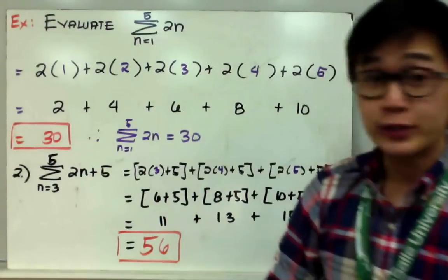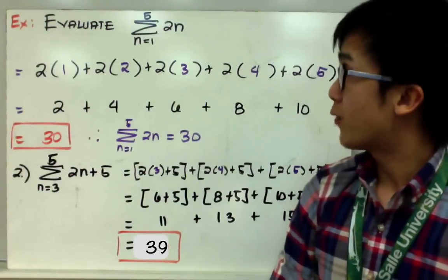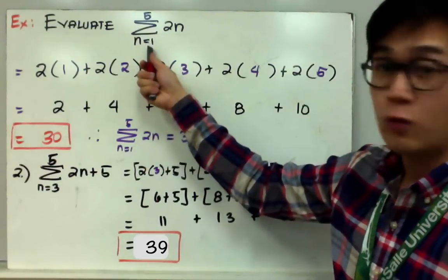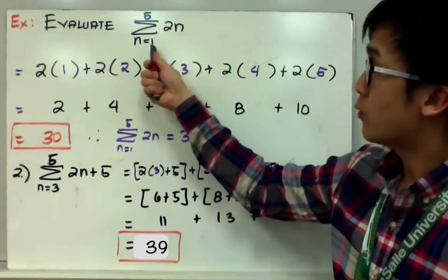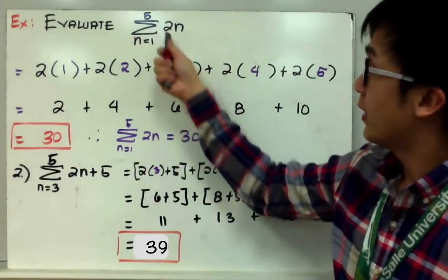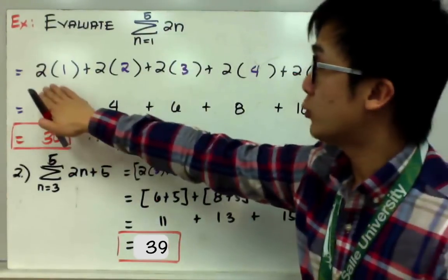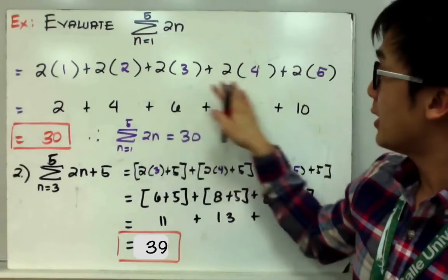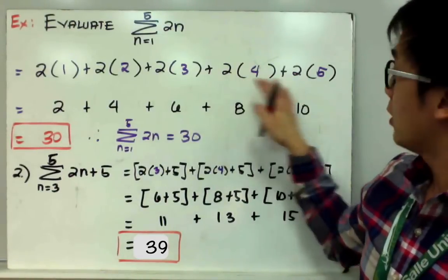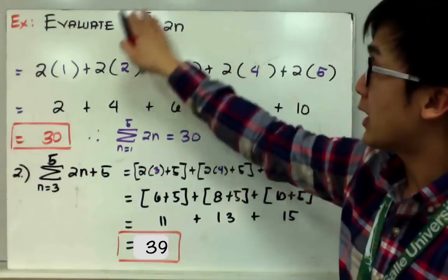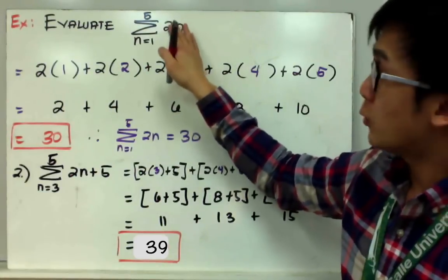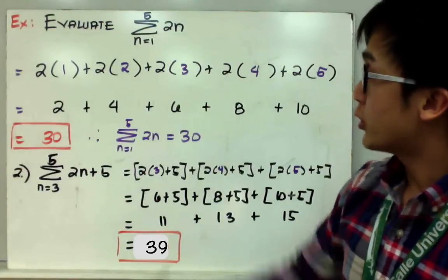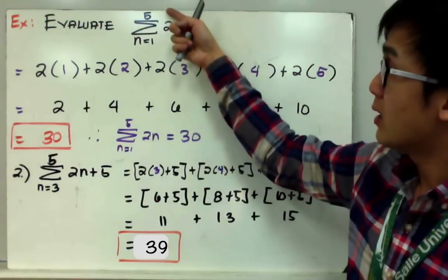Here's our first example: the summation of 2n from 1 to 5. All you have to do is substitute the values 1, 2, 3, 4, and 5 into your function 2n. So you get 2×1 plus 2×2 plus 2×3 plus 2×4 plus 2×5. The summation notation is basically telling you to add them all up — that's why it's called summation: the sum of all terms from your lower limit up to the upper limit.